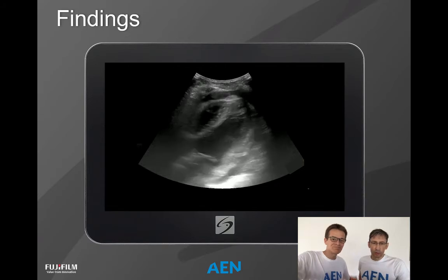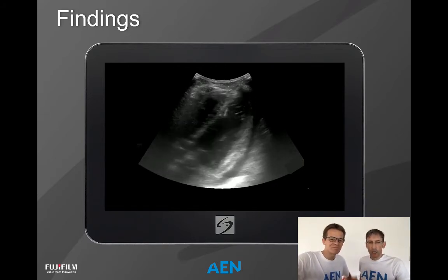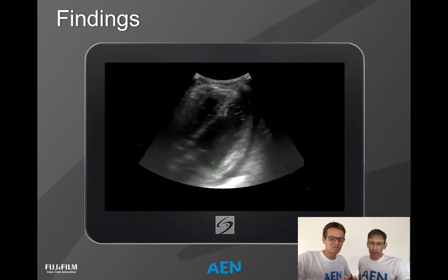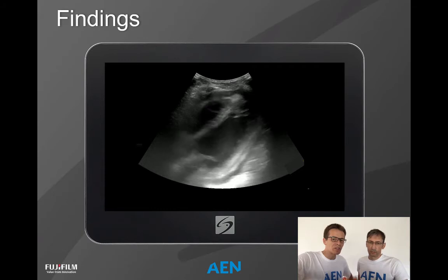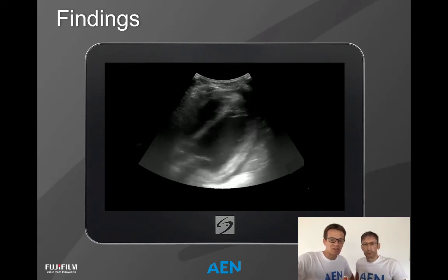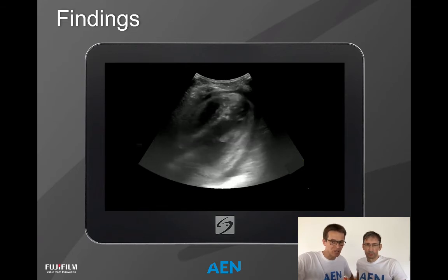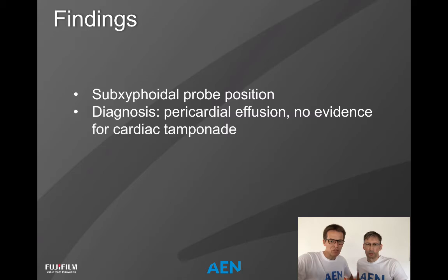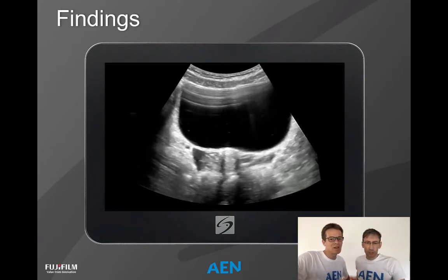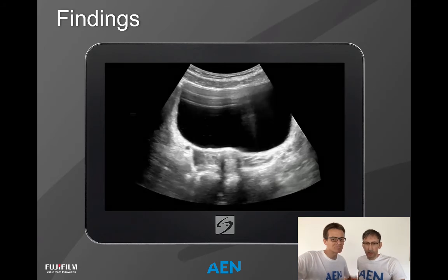Here we can see the heart in the subcostal view, and what is very clear is a small hypoechoic stripe around the heart wall — this is pericardial effusion and must be treated immediately. Whether immediate action is needed depends on whether it has become a pericardial tamponade. In this case it has not yet progressed to cardiac tamponade, but it could. Finally, at the FAST five position, we see the bladder, but underneath it there are asymmetric hypoechoic areas — a typical finding for free fluid in the lesser pelvis.